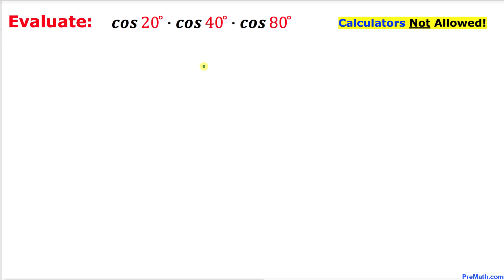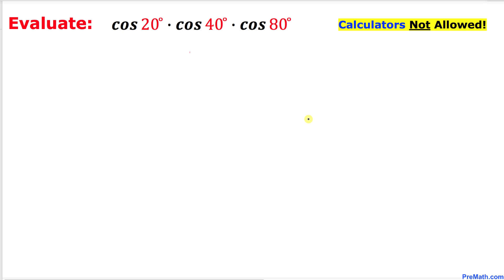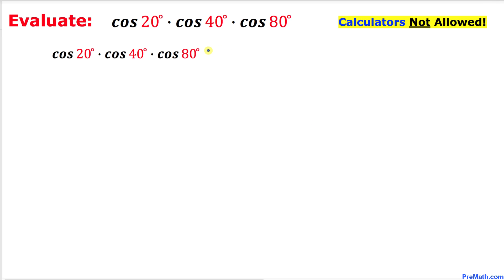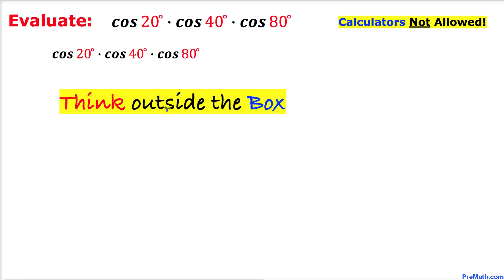Welcome to Pre-Math. In this video tutorial we are going to find the value of cosine of 20 degrees times cosine of 40 degrees times cosine of 80 degrees, and we are not supposed to be using calculators of any kind. So let's go ahead and get started with the solution. Here's the original problem — I have just copied it down over here.